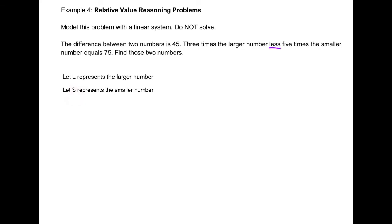Step 2: generate the equations. The first sentence says the difference between two numbers is 45, so we write L − S = 45. The second equation: three times the larger number minus five times the smaller number equals 75, so 3L − 5S = 75. We have now generated two equations to create a linear system.